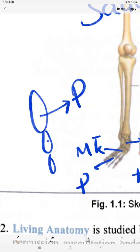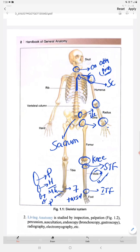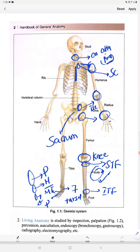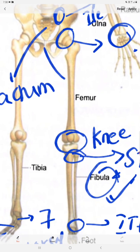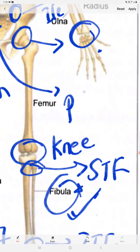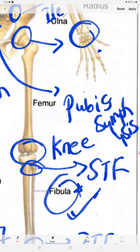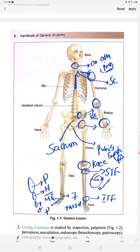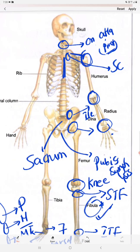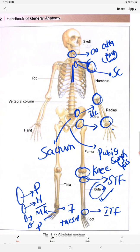This is the proximal phalanx, this will be the distal phalanx, and this is the middle phalanx. So we have briefly discussed all the skeletal bones and the joints formed between them. Also remember this is the pubic symphysis — pubic symphysis — an important joint.